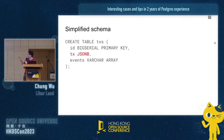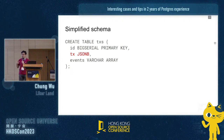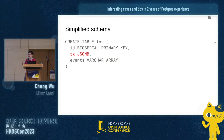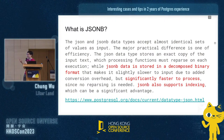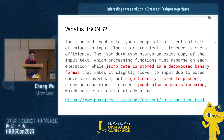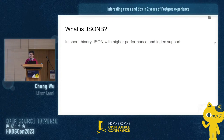For the SQL schema, simplified, we define the schema like this. First, we have an ID for each row, for each transaction. We also have events so that we can search for all transactions sent from one account. For everything else, we simply put them into a data structure called JSONB in Postgres. JSONB is a Postgres version of JSON, but in binary format, therefore it's stored more efficiently. Most importantly, it supports indexing of JSON fields. In short: binary JSON with high performance and index support.